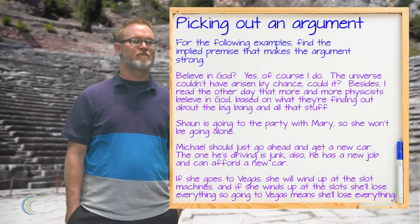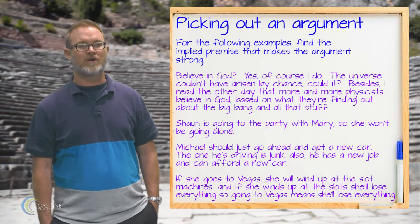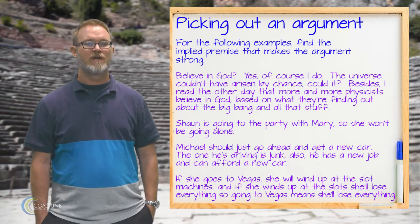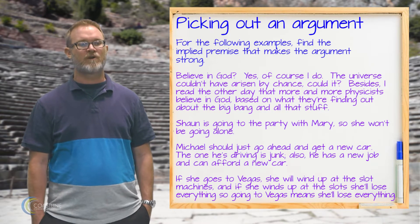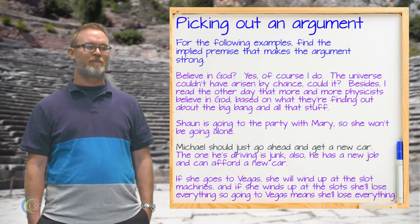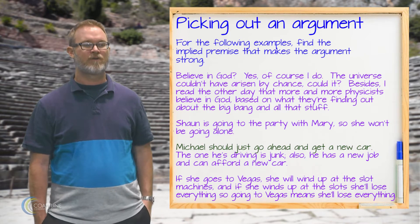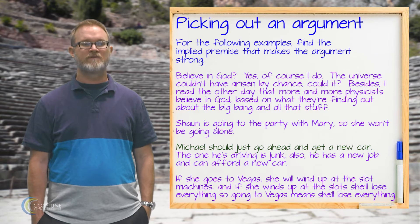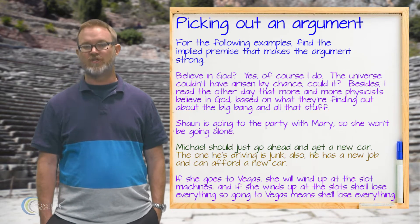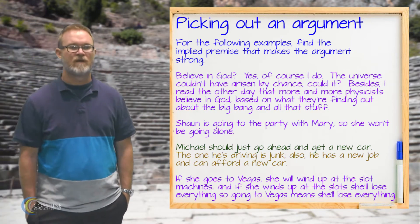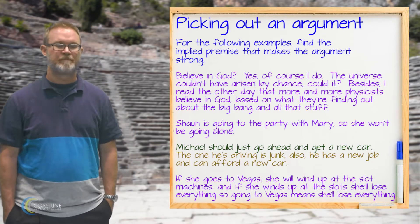Next: Michael should just go ahead and get a new car. The one he's driving is junk. Also, he has a new job and can afford a new car. Here the first sentence — Michael should just go ahead and get a new car — is our conclusion. The two reasons are that the car he's driving is junk, and that he has a new job and can afford it.